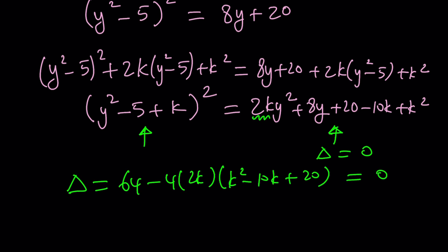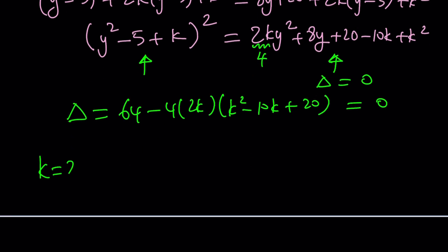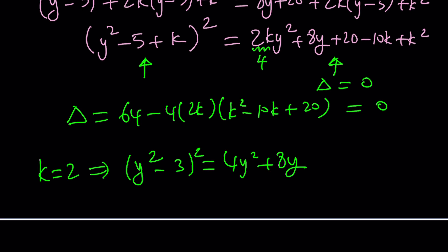Can k be one half, so that we get one y squared? Yes, but it doesn't give us a perfect square. But if you go with 4, which is another perfect square, that would work. Which means if k is equal to 2, then we would get something like this: y squared minus 5 plus 2, which is y squared minus 3 squared, equals 4y squared plus 8y. And if you replace k with 2 here, you're going to get 4 minus 20 plus 20, that's going to be another plus 4. And if you factor out a 4 here, you're going to get y squared plus 2y plus 1, which is a perfect square, and that's just perfect.